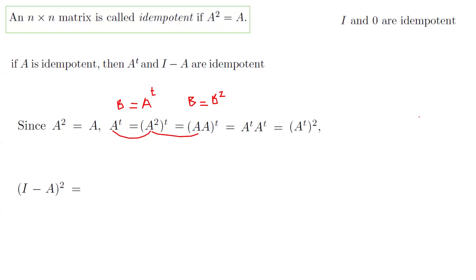Now, what about I minus A? If we raise it to the second power, it means we take (I minus A) multiplied by itself. Expanding: (I minus A)(I minus A) equals I squared minus I times A minus A times I plus A squared. Since A is idempotent, A squared equals A, and negative A plus A becomes the zero matrix, so we end up with I minus A.